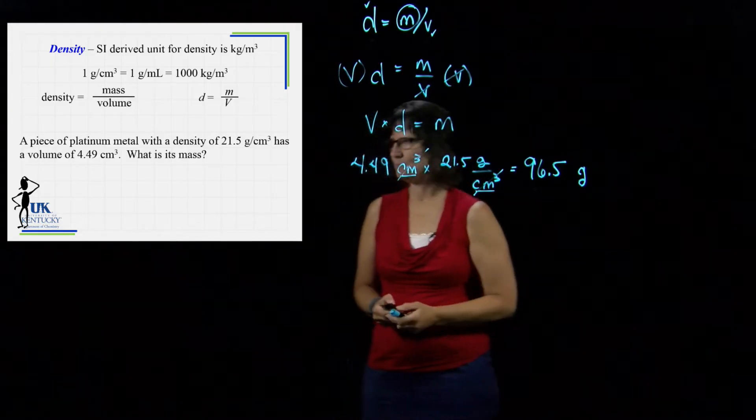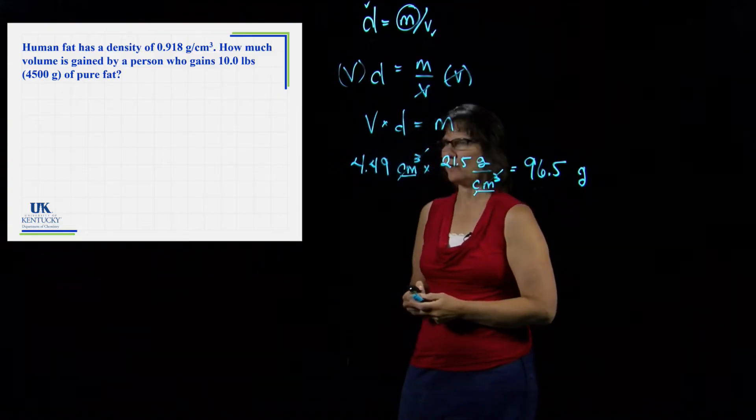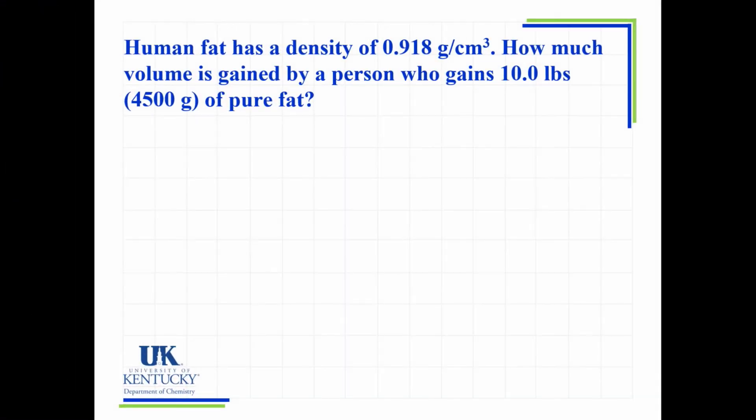Let's continue to the next one. In this one, it says human fat has a density of 0.918 grams per cubic centimeter. If a person lost 10 pounds, and I'm telling you that 10 pounds is 4,500 grams of nothing but fat, how much volume would they have actually lost in their body?